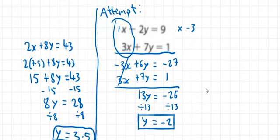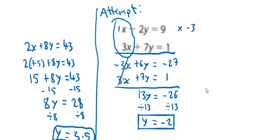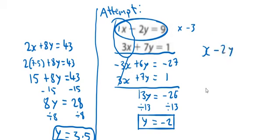So y equals minus 2. I've worked out what y is. Now the only job left is to work out what x is. If I take the top equation again and just write it out: x minus 2y equals 9. I'm going to put minus 2 in instead of the y. So x minus 2 multiplied by minus 2 equals 9. Now minus 2 multiplied by minus 2 is plus 4, because minus multiplied by minus gives you plus. So x plus 4 equals 9. Subtract 4, and I get x equals 9 minus 4 which is 5. So x equals 5. I've found x and y again.